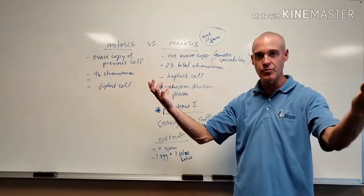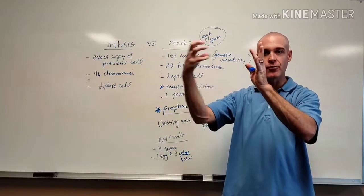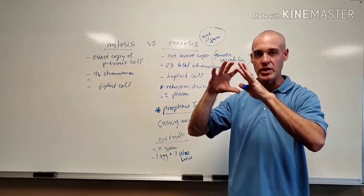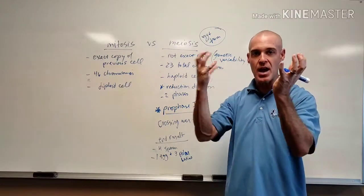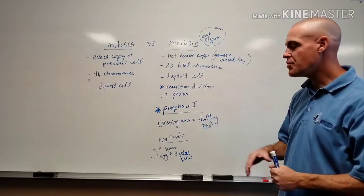And obviously, it's got to be 23 from the egg and 23 from the sperm so that when they combine, the sperm fertilizes the egg, we get our 46 again. The 46, the 23 pairs are restored.